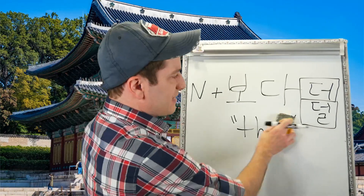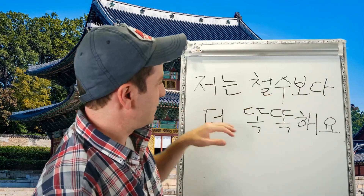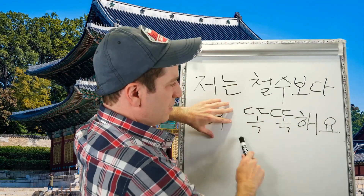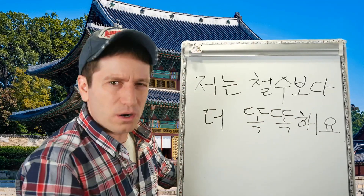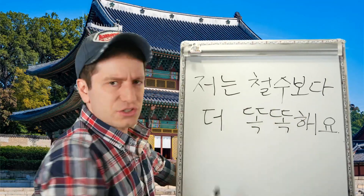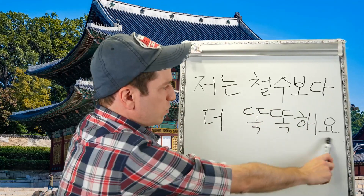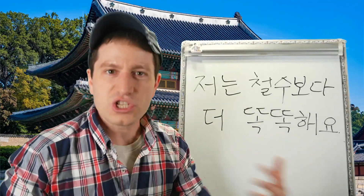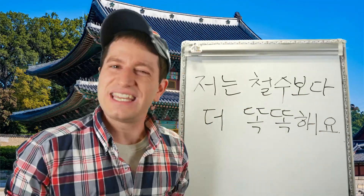Let's do a simple sentence: 저는 철수보다 더 똑똑해요. That means 'I am more smart than 철수.' So 더 똑똑해요 means 'I am more smart,' and 철수보다 is where we get the comparison. Literally: I am more smart than 철수 — 저는 철수보다 더 똑똑해요.